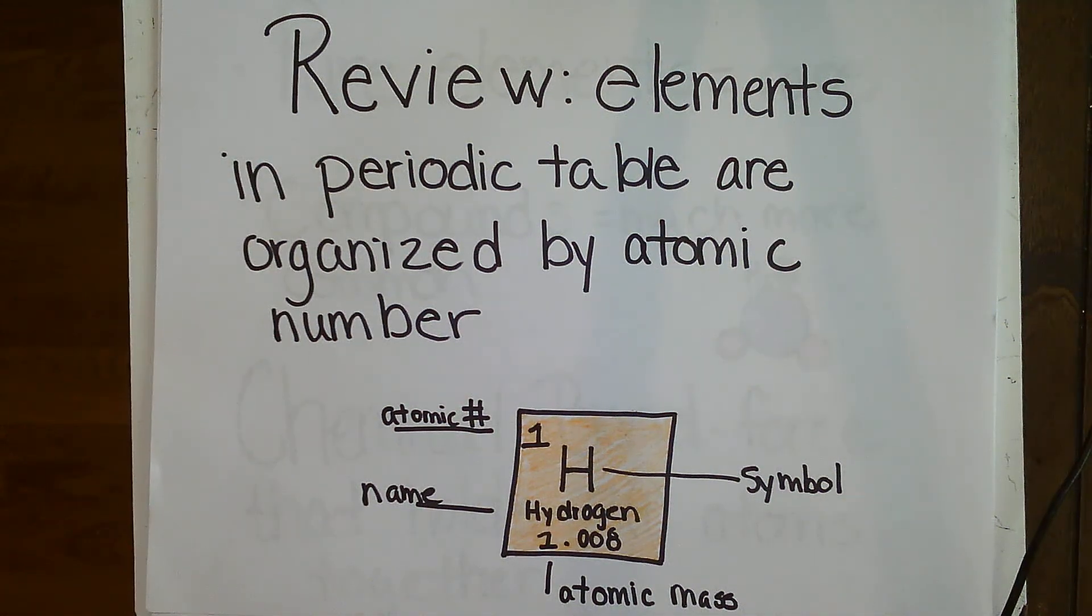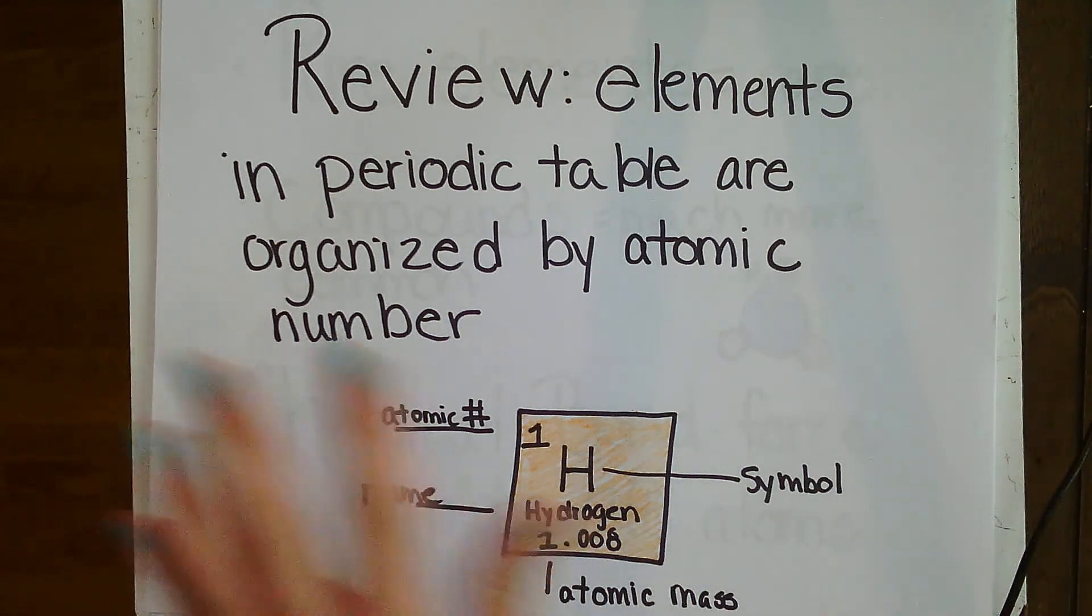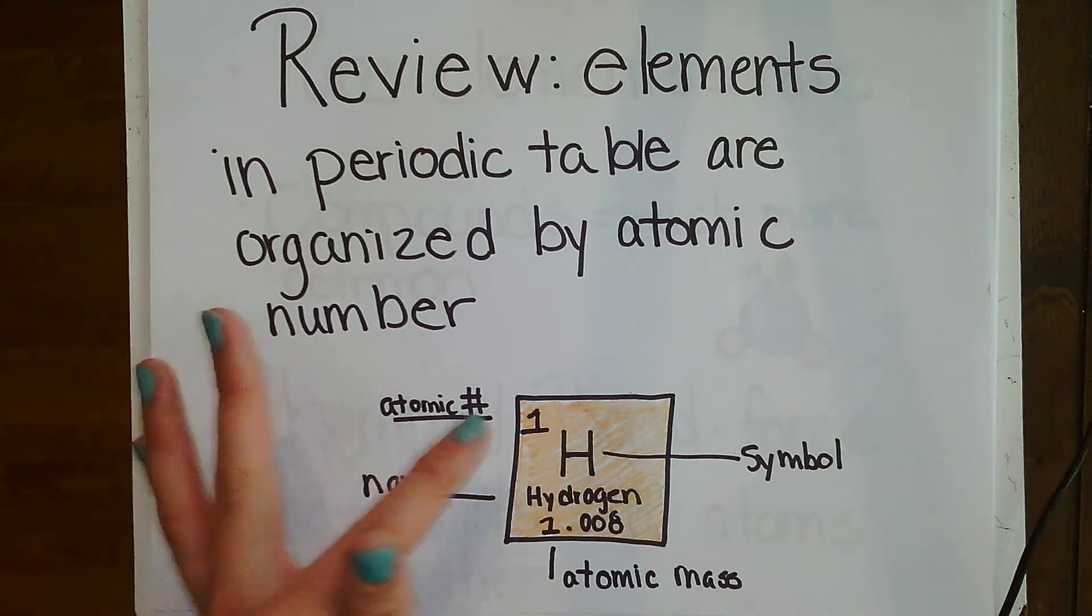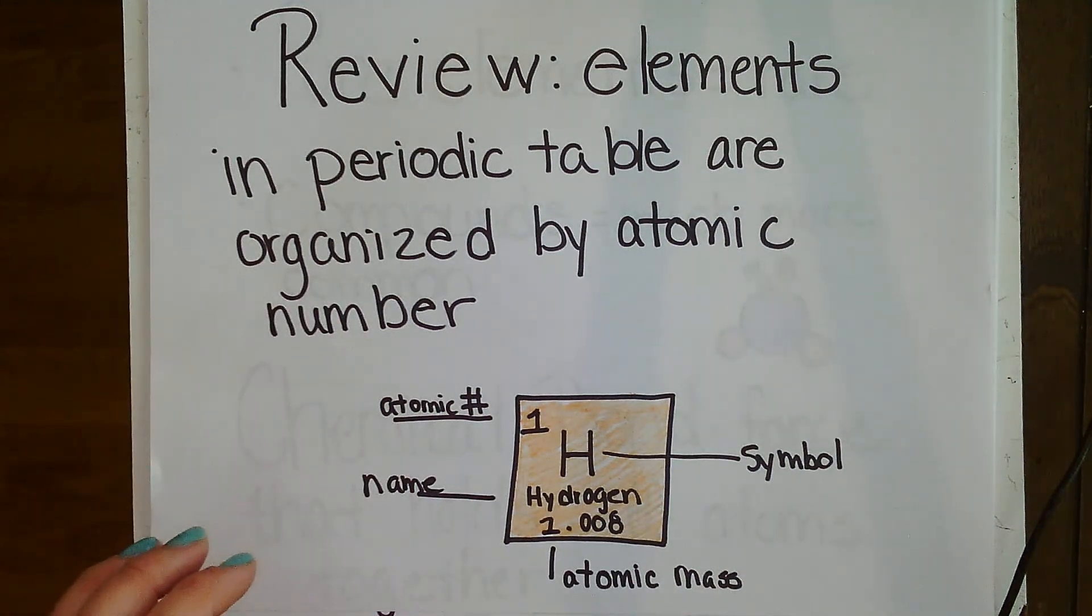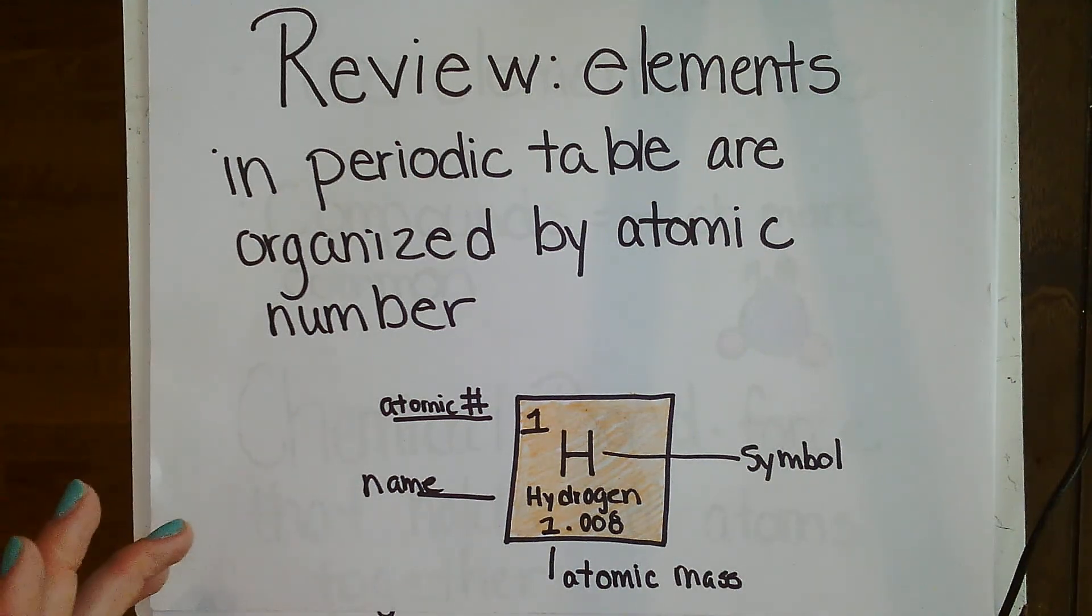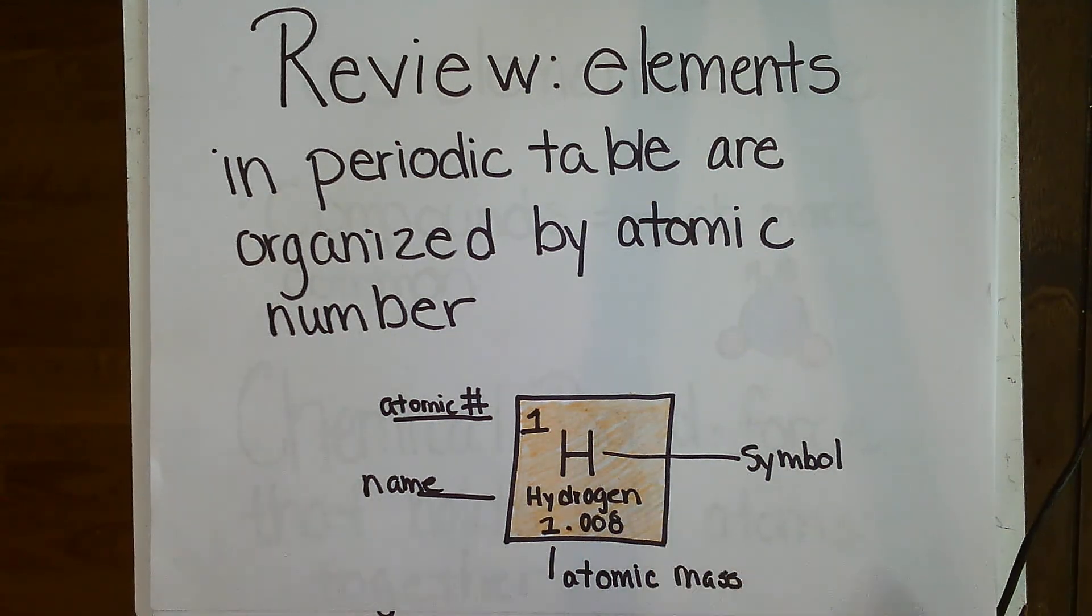Hi guys, so last cycle we were just kind of introducing the main ideas of the periodic table. We learned about elements, how they're organized in the periodic table, what the atomic number, the atomic mass, and the symbol mean. This cycle we're going to jump deeper in. We're going to learn how those numbers affect how elements react with each other and talk about chemical reactivity and how compounds are created.